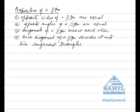Properties of a parallelogram. Number 1: Opposite sides of a parallelogram are equal. Number 2: Opposite angles of a parallelogram are equal. Number 3: Diagonals of a parallelogram bisect each other.